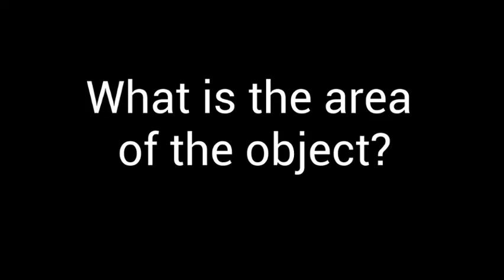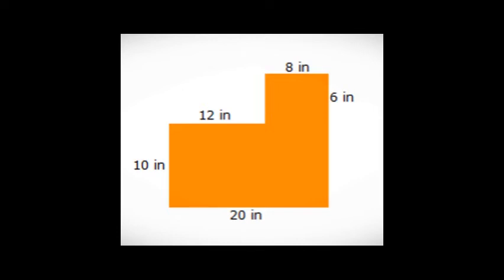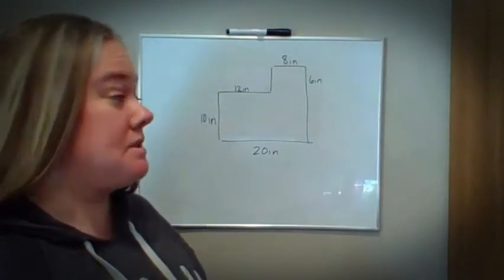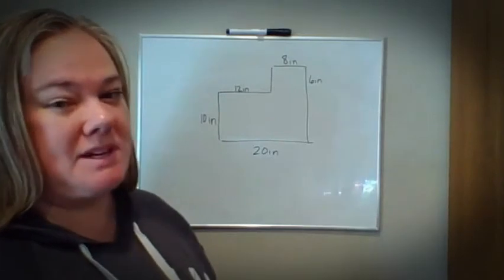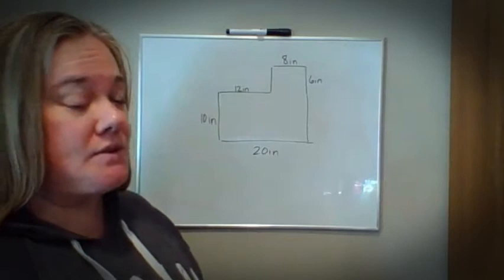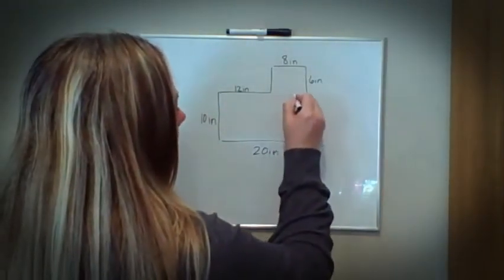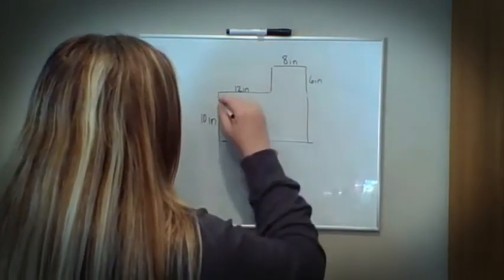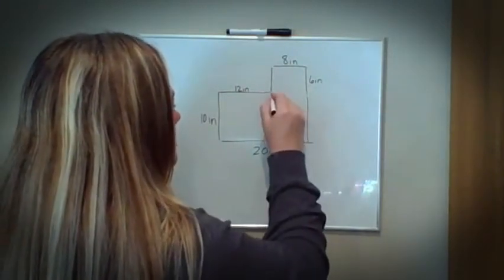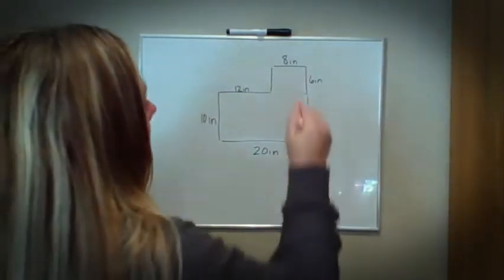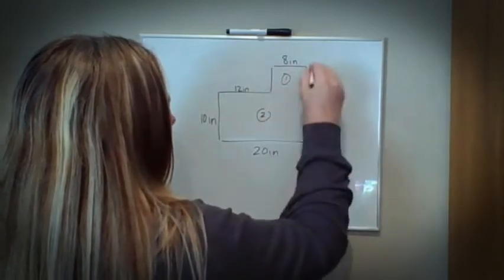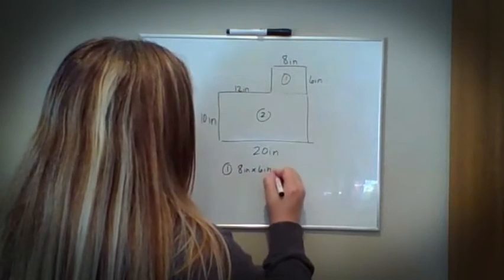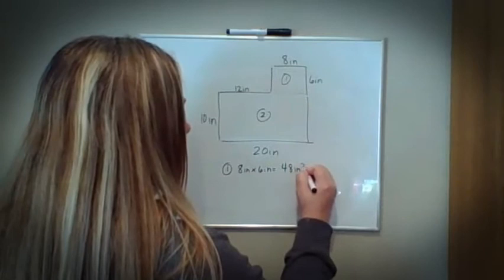What is the area of the object? In this problem, I'm going to break this apart into two different shapes. You could break it into many shapes, but I'm going to choose as few as possible because it makes for fewer math errors. I'm going to choose shape number one and shape number two. Shape number one is a rectangle: length times width, which is 8 inches times 6 inches. Eight times six is 48, so it's 48 inches squared.